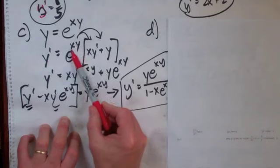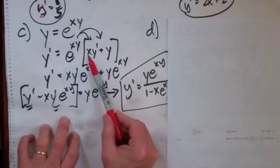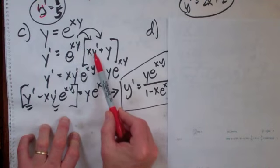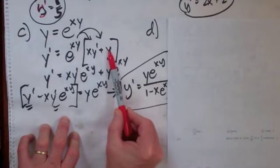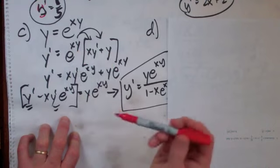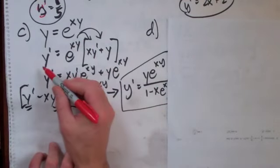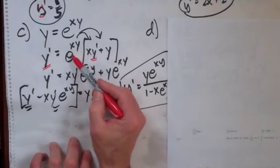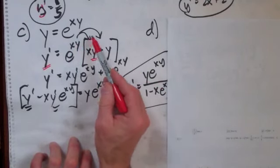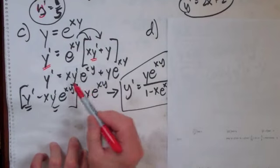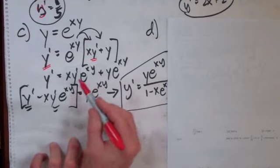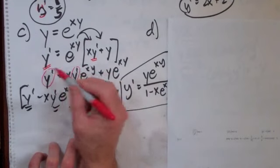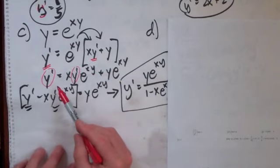The derivative of this is a little product rule. X times the derivative of Y is just Y prime, plus Y times the derivative of X, which is 1. So it's just like this. Now I've got Y primes right here and right here. So I need to distribute this E to the XY inside to each of those. And there it is. I've distributed it in.